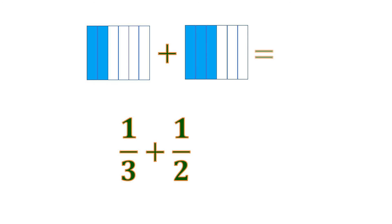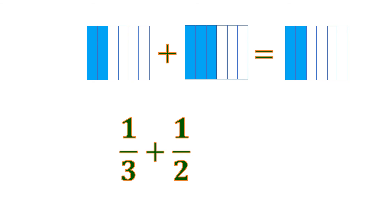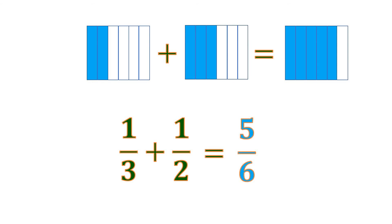Let us combine. From 2 out of 6, we add the 3 shaded parts out of 6, and it becomes 5 out of 6. So the sum of 1 third and 1 half is 5 sixths.